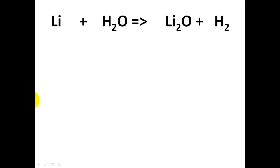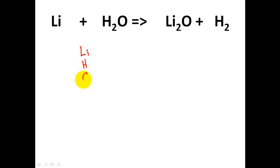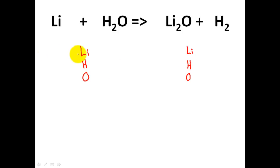In the first equation we see here, the first thing I want you to do is take an inventory of the elements listed. On this side, my inventory includes lithium, hydrogen, and oxygen, and I write them in the same order over here: lithium, hydrogen, and oxygen. Next I want you to count how many atoms of each you have.